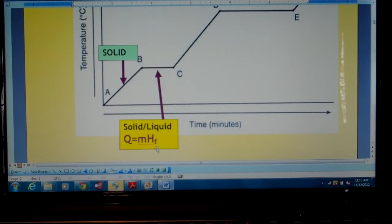Remember Q is our joules, our heat. M is the mass of the substance. And then HF is the heat of fusion.